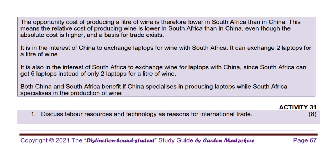As usual, we conclude our lesson with Activity 31 on page 67. Question 1: Discuss labor resources and technology as reasons for international trade. 8 marks.